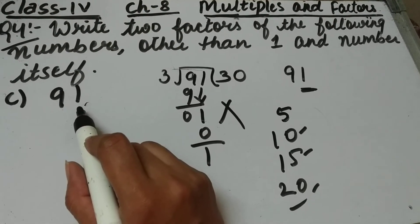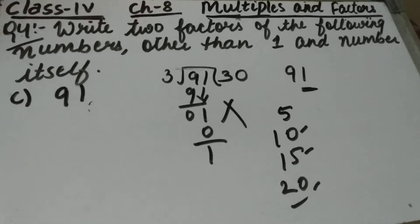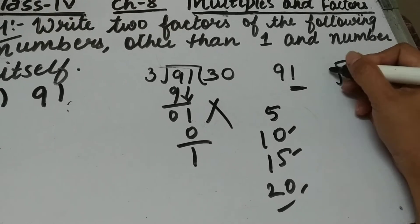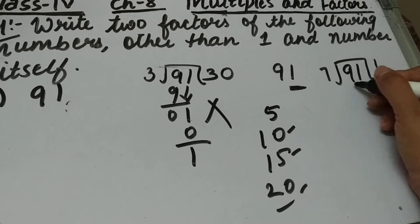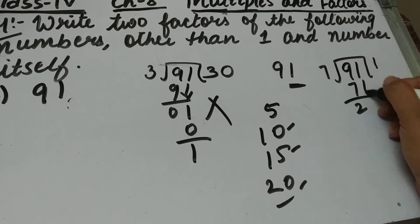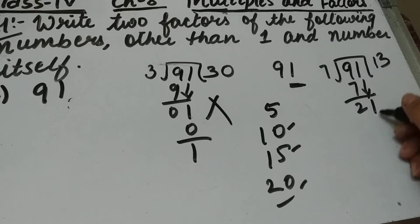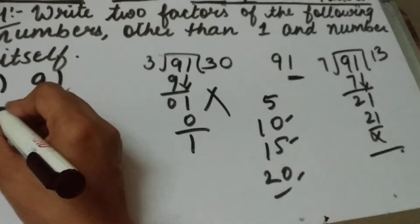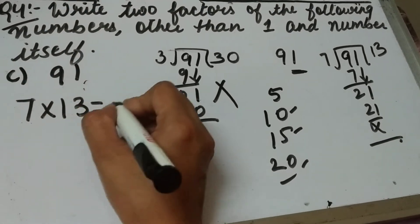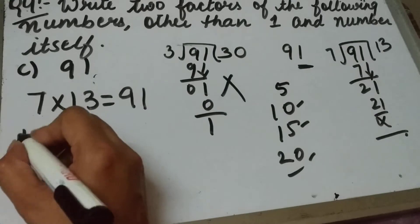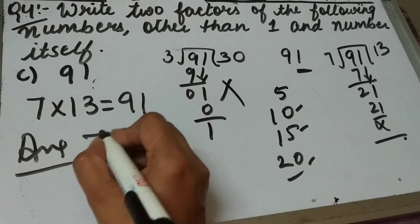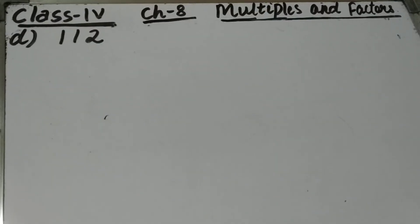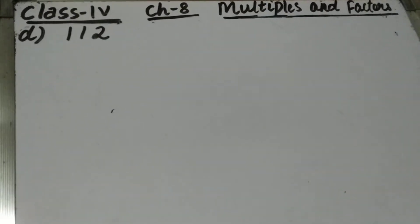Now we will check whether 91 is divisible by 7. 7 ones are 7, 7 threes are 21, remainder is 0. That means 7 is a factor of 91. 7 times 13 is 91. So the 2 factors of 91 are 7 and 13.